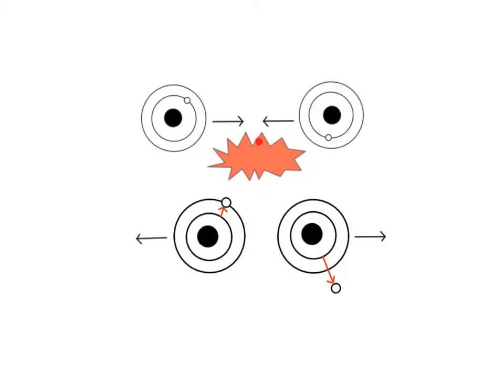Collisions between atoms happen frequently, and if the collision energy is strong enough, the movement of valence electrons can be disturbed. Electrons can move to another electron shell, or they can be lost from an atom entirely.